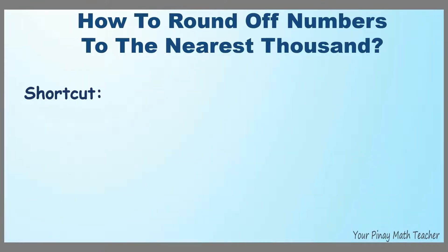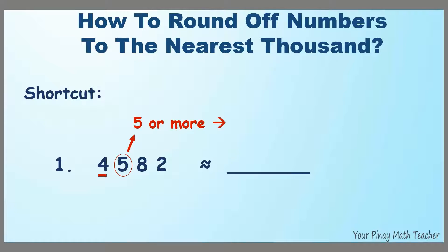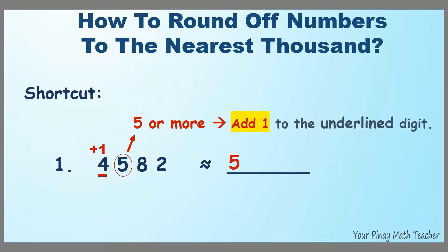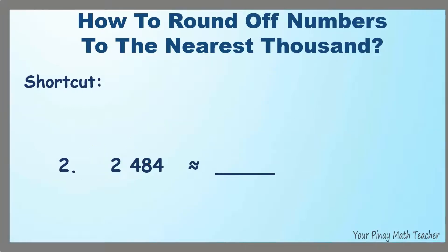So, what is the shortcut to round off numbers to the nearest 1,000? Number 1: 4,582. Underline the thousands digit and then look at the next digit to its right. Encircle it. If the encircled number is 5 or more, add 1 to the underlined digit. Since it is 5, add 1 to 4 — giving 5. The encircled digit and the rest become 0. So, 4,582 is rounded off to 5,000.